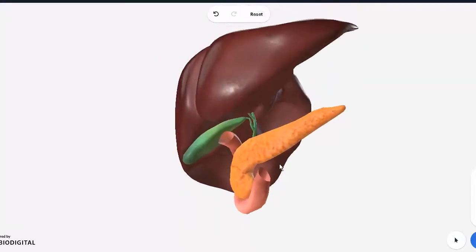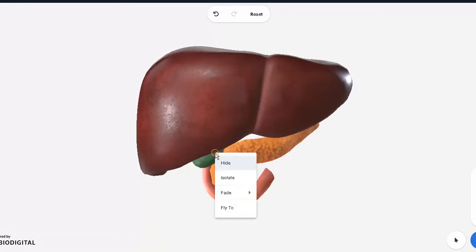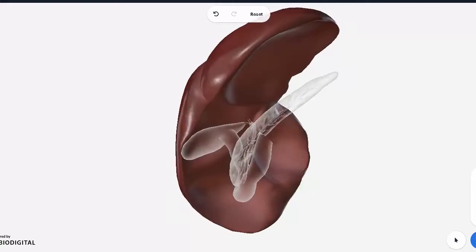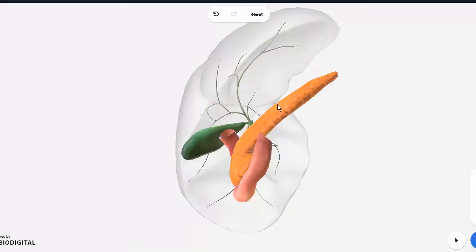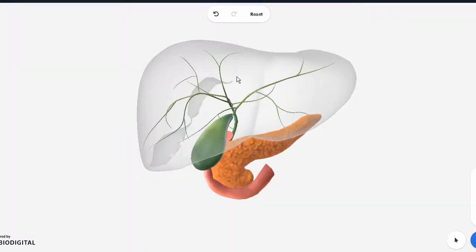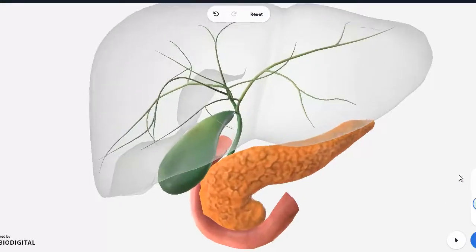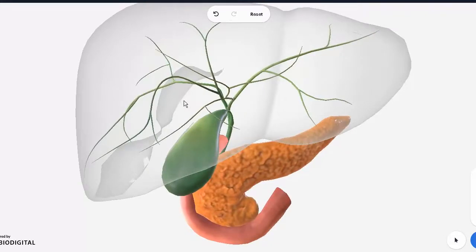First let's look at the gallbladder alone. You can see that there are all these canaliculi and interlobar ducts coming from the liver. This what you're looking at is the intrahepatic biliary tree. There's an extrahepatic portion and an intrahepatic portion. This biliary tree receives the bile from the hepatocytes of the liver.